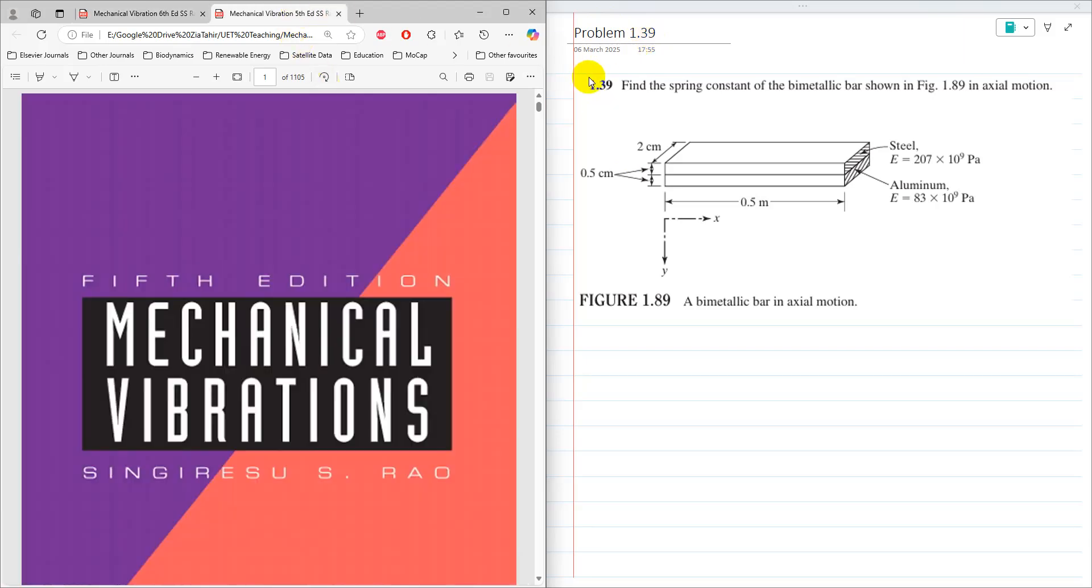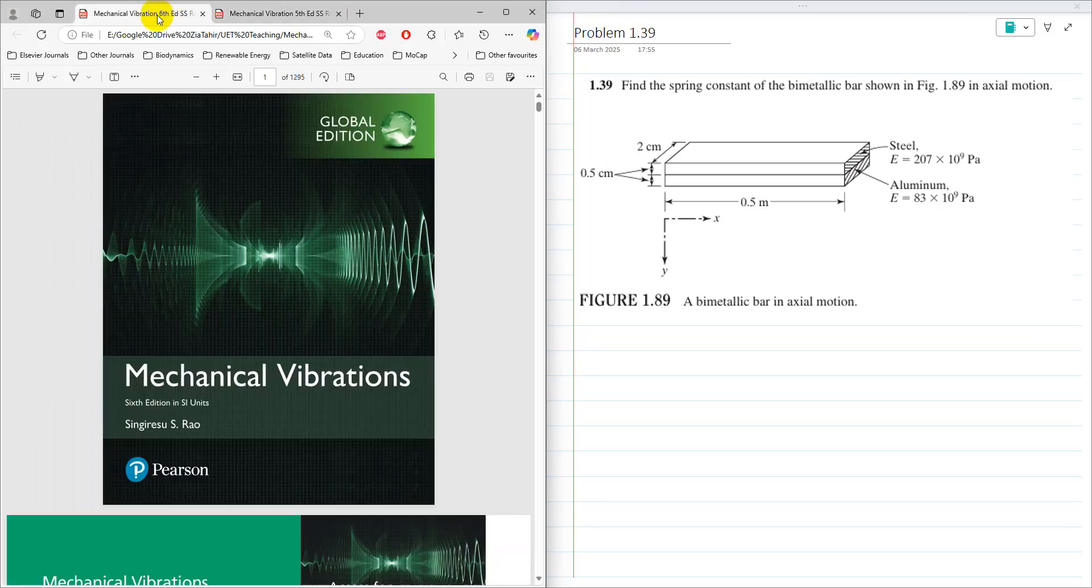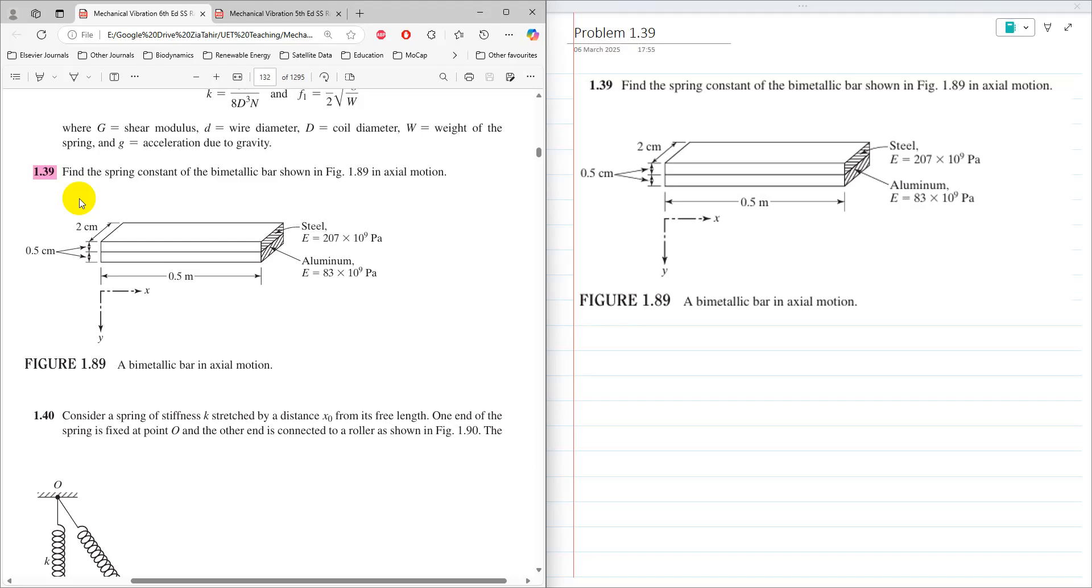Problem 1.39 is the same in the 5th edition. The problem asks to find the spring constant of a bimetallic bar shown in Figure 1.89 in axial motion.